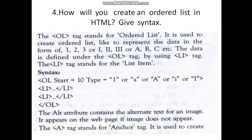The <li> tag stands for list item. Here the syntax is given: <ol start="10"> — that is, it starts from 10. The type attribute can be set to 1, small letter 'a', capital letter 'A', or small Roman numeral 'i'. Here you give the list items, close each list item, add the next list item, and close it.